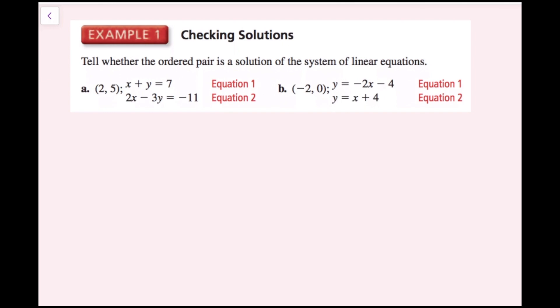For example one, we need to tell whether the ordered pair is a solution of the system of linear equations. We're going to plug in the x component for x and the y component for y in both equations. If it's true for both, then it is a solution. If it is not a solution for at least one of them, then it is not a solution to the system.